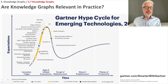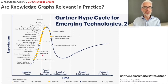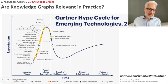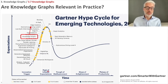This Hype Cycle is from 2019, so it's already two years old. The colors indicate time to reach the plateau — gray means two to five years, yellow means five to ten years. As you can see, knowledge graphs had already risen rather high in 2019 according to expectations, reaching the peak of inflated expectations in five to ten years from now. So you see knowledge graphs as a topic are on the rise and are rather important.